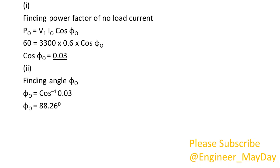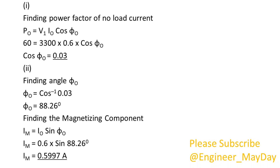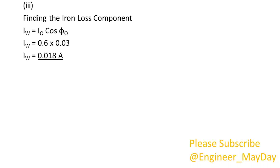2. Finding angle phi-0: phi-0 equals 88.26 degrees. Finding the magnetizing component: Im equals 0.5997 amperes. 3. Finding the iron loss component: Iw equals 0.018 amperes.